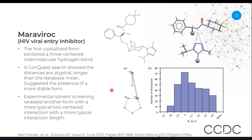So that was a clue to go back and look for potential other polymorphs. Experimental screening found another polymorph which did not exhibit this three-centered hydrogen bond and was deemed more stable. So in this case, a more stable drug polymorph was found based on analysis of the CSD.